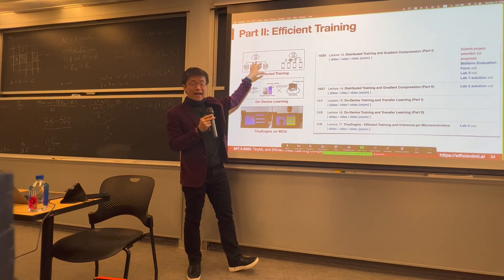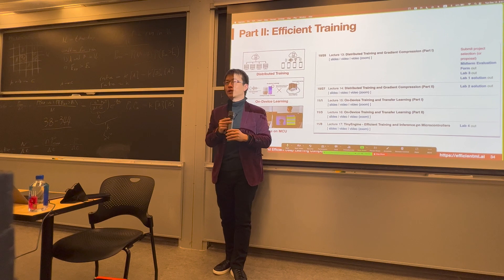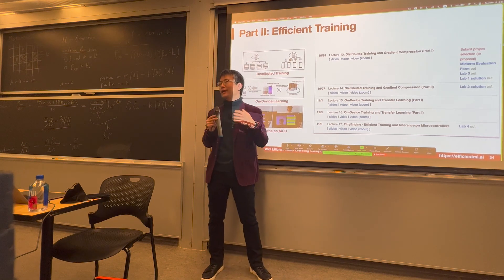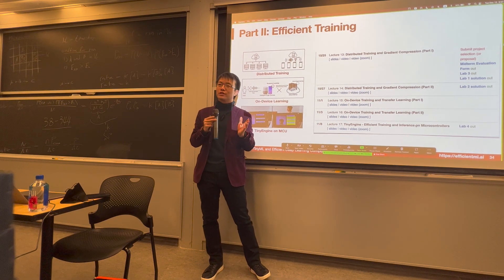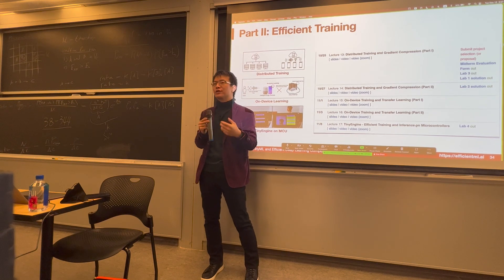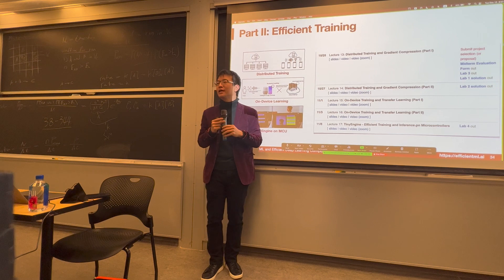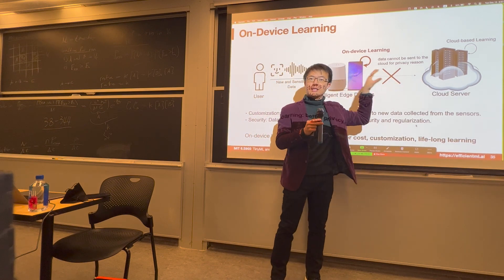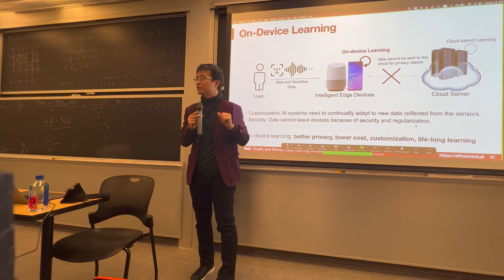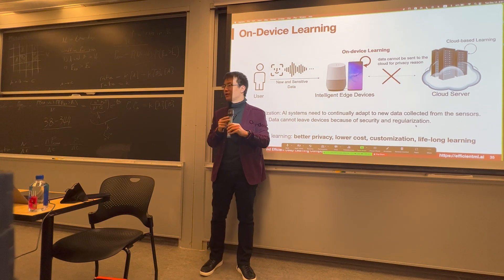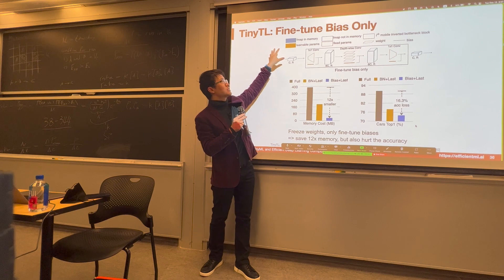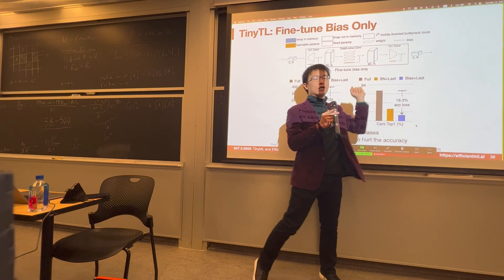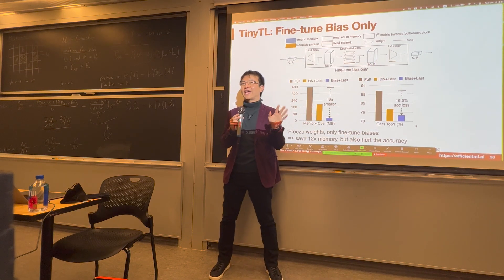Apart from cloud training, we also covered on-device training — learning on the edge to enable always-on lifelong learning, customization, and privacy preservation, since users' private data like speech, voice, emails, or photos doesn't need to be sent to the cloud. However, on-device training is very challenging and is limited by memory, since we have to store intermediate activations. We learn techniques like tiny transfer learning (tiny TL) to fine-tune only the bias, which doesn't require storing any intermediate activations.